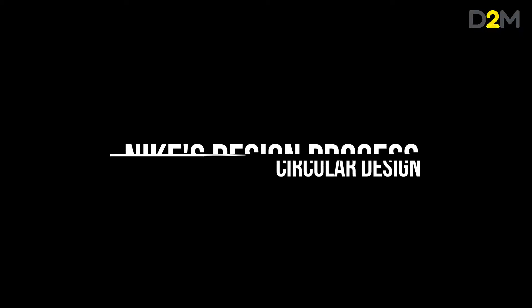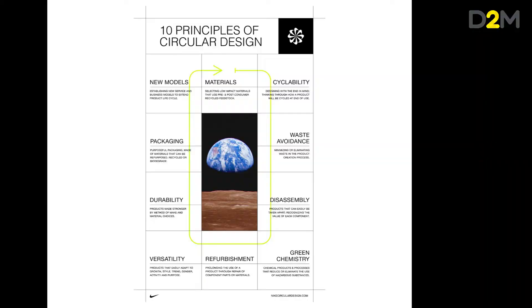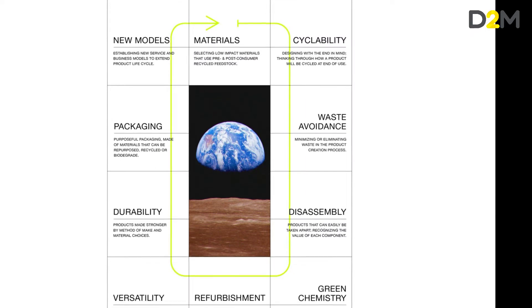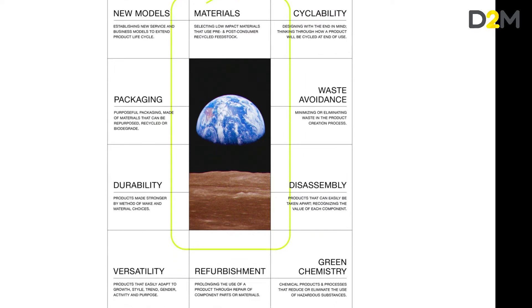This video is all about Nike's design process and what you can learn from it when developing your own soft goods product. Nike have recently shifted their design process towards focusing on producing products with the highest performance impact and the lowest environmental impact. They've produced a guide with 10 circular design principles and in this video I'm going to focus on three of them: material choices, waste avoidance and versatility.